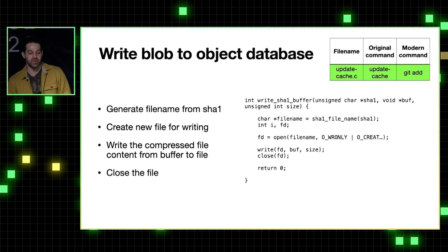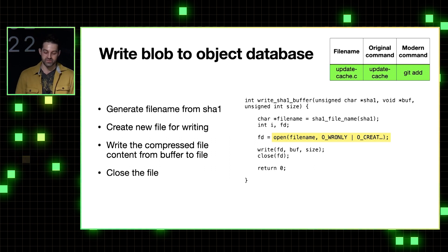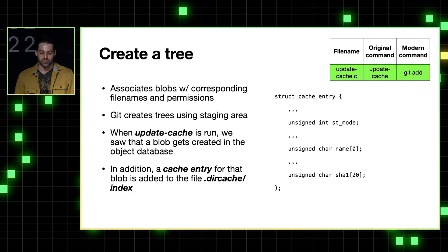So now the blob is ready to be written to the object database. And the code does this by building up the file name and path to place the blob in the object database. And then it uses the open function again, but this time just to create a new file at that location, and then the write function in C is used to take our blob, our compressed blob that's sitting in memory, and just write it into that new file.